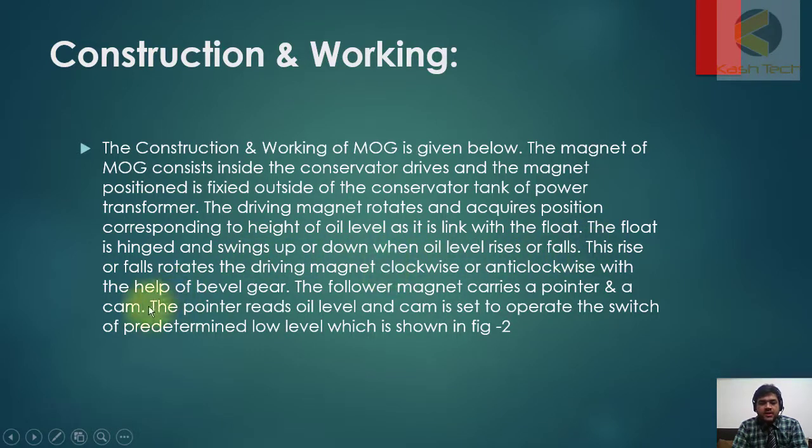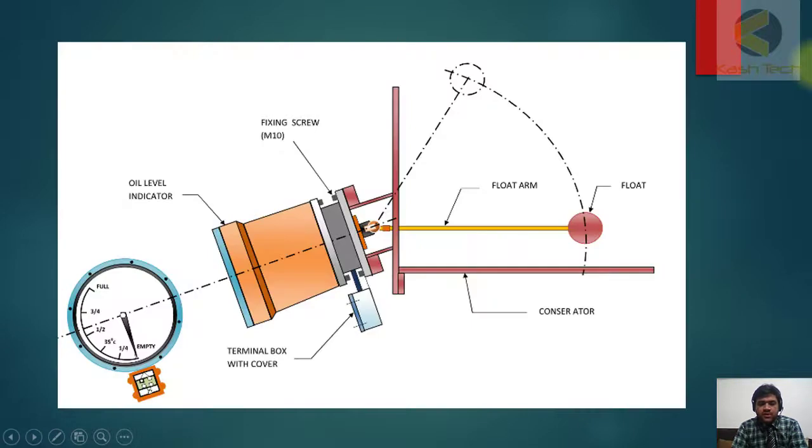This rise or fall rotates the driving magnet clockwise or anti-clockwise with the help of gear. The follower magnet carries a pointer and a cam. The pointer reads oil level and the cam is set to operate the switch at predetermined level which is shown in figure two. So again we'll come back.